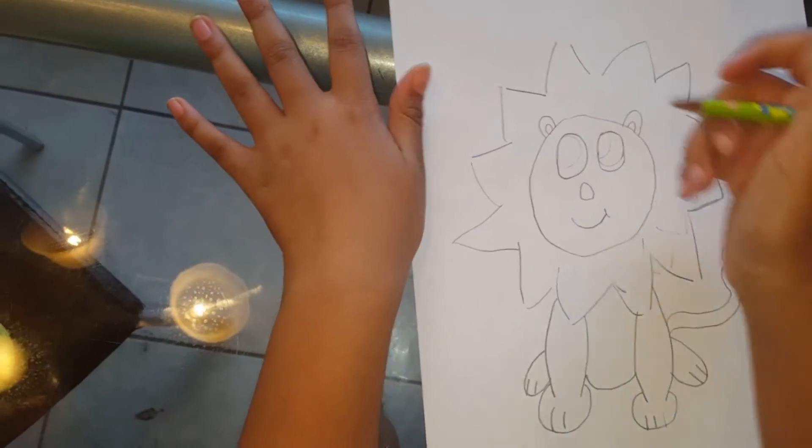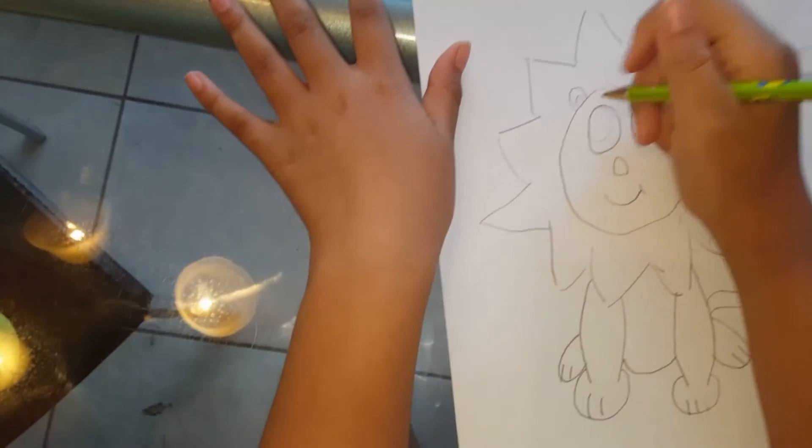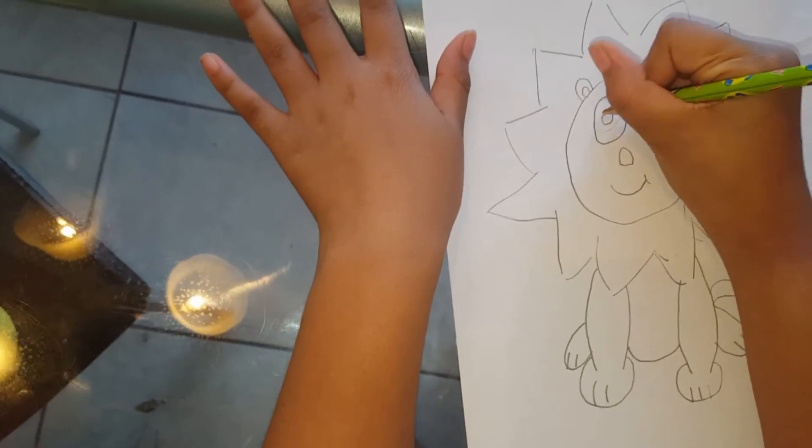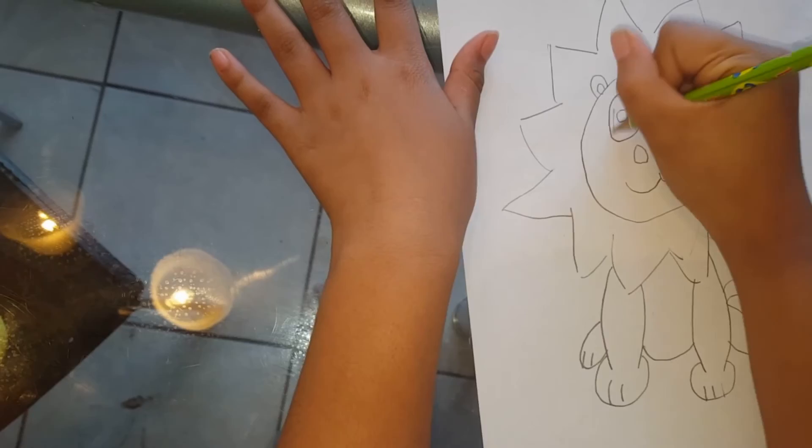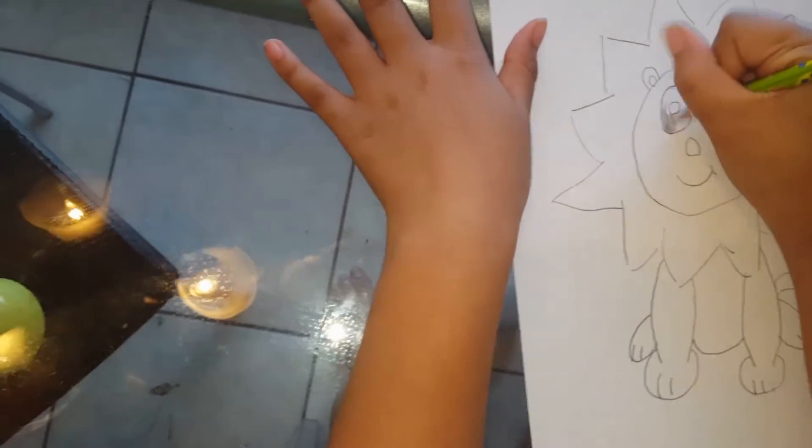And that's it. Oh wait, first we have to color in the eyes. So we're going to draw a circle on each of them. And then color in the outside.